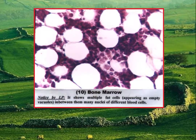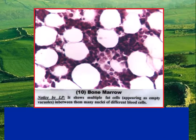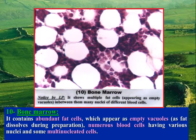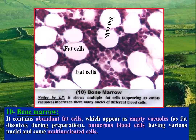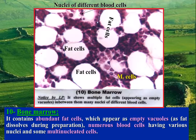Bone marrow is a specialized connective tissue of reticular type containing blood sinusoids and cells, mostly fat cells which appear as empty vacuoles as fat dissolves during preparation. There are also numerous blood cells having various nuclei and some multi-nucleated cells.